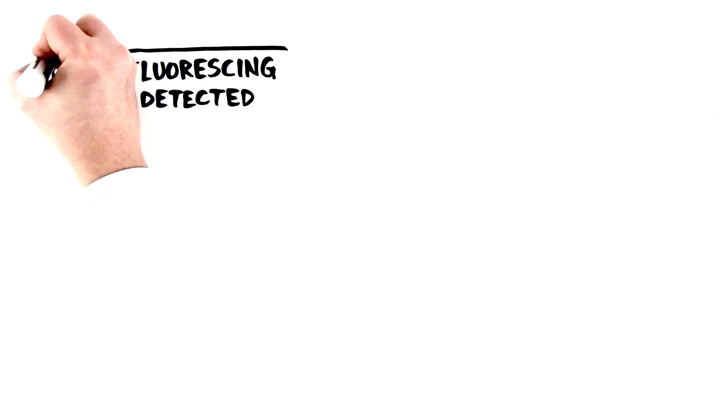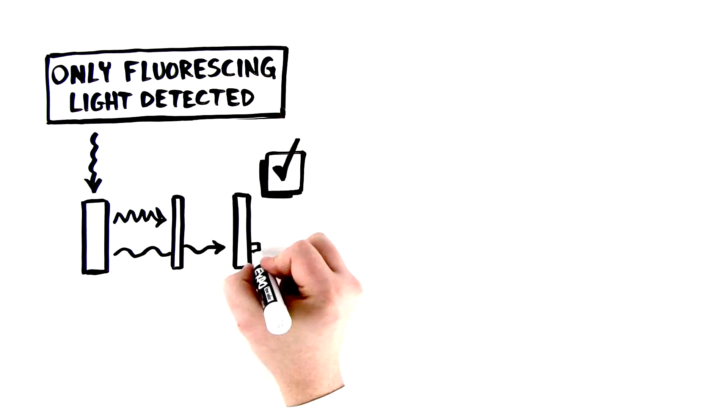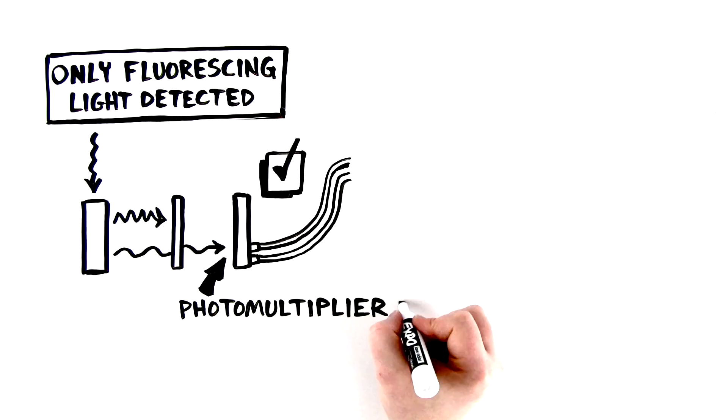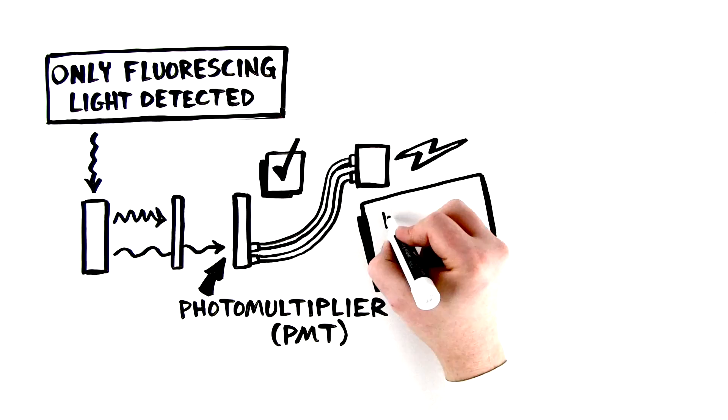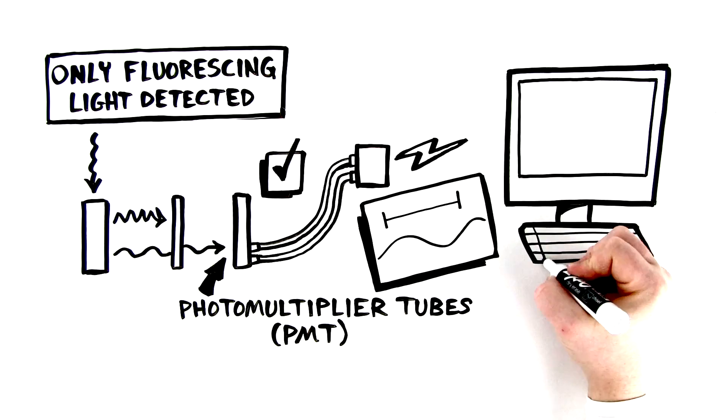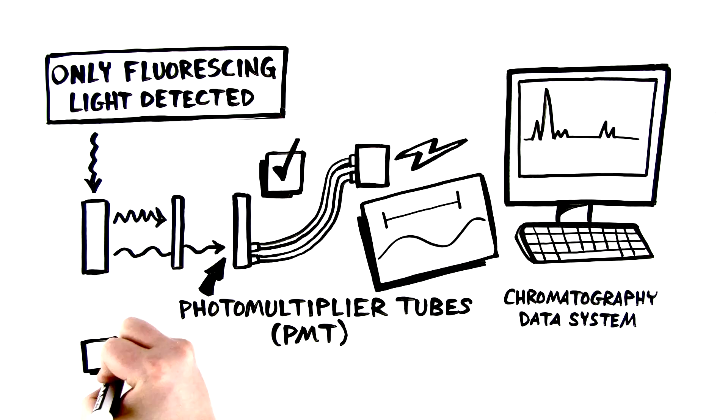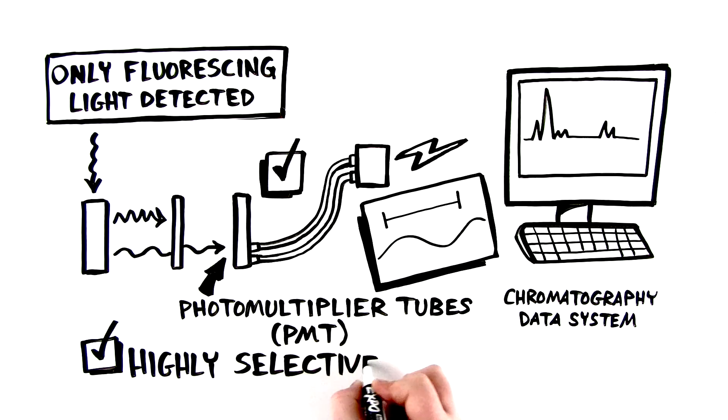The photomultipliers measure the amount of emitted light and convert it into an electronic signal that is then turned into a chromatogram by the Chromelian Chromatography Data System. In a nutshell, fluorescence detection is a highly selective and sensitive detection technique.